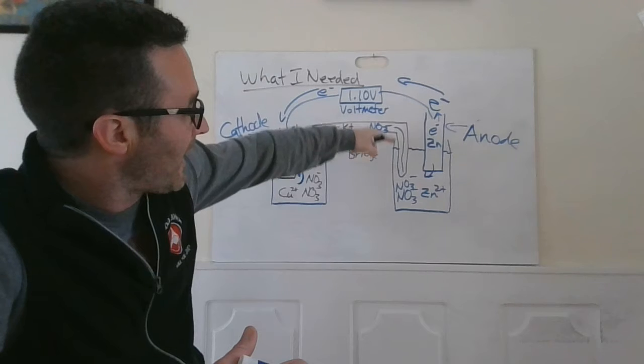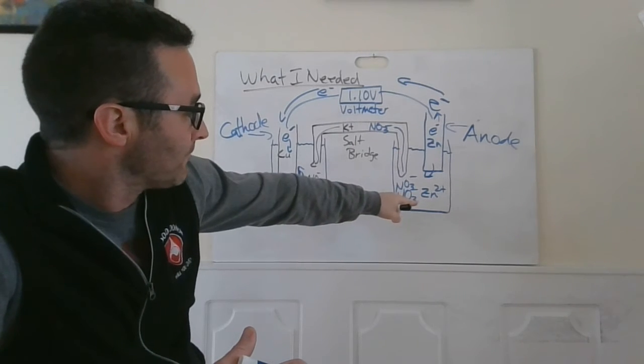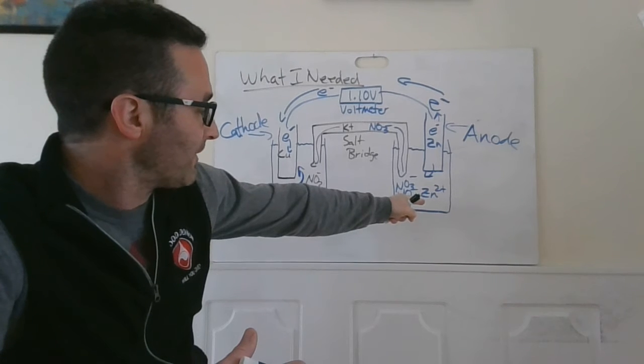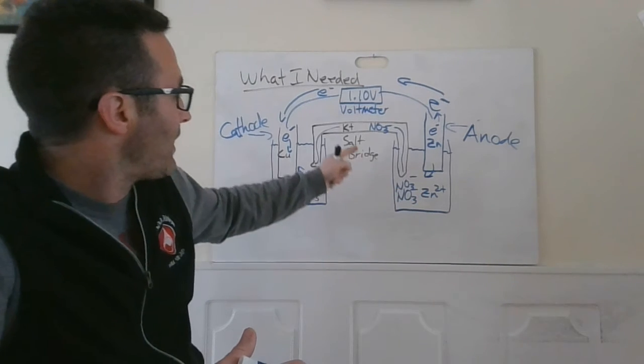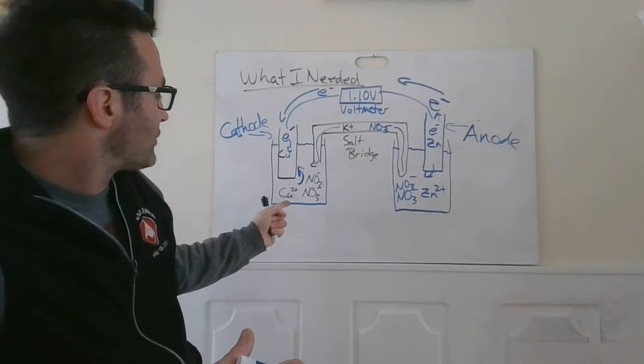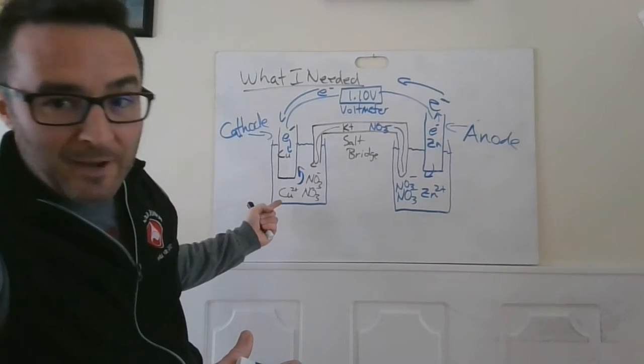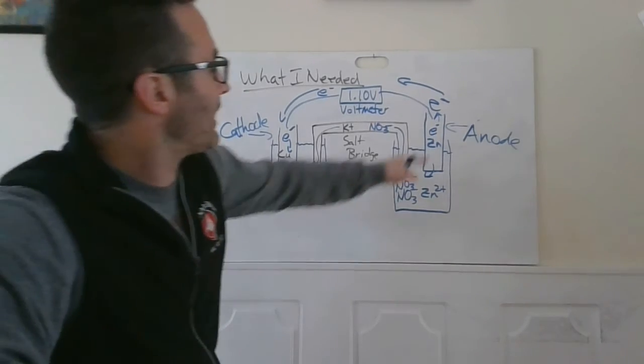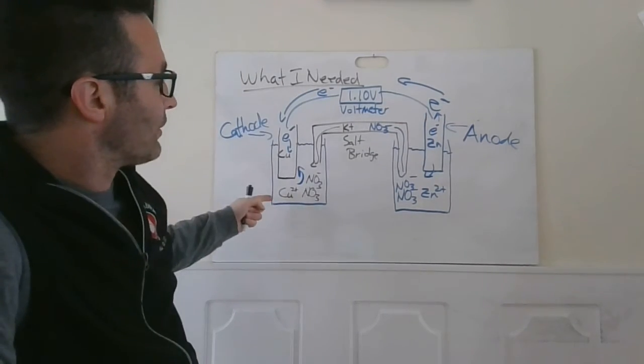So the negative ion is going to go to the anode side to balance out the positive zinc that's going into the solution. And the potassium, your positive ion in the salt bridge, will go to the side that's losing the positive ion out of the solution. Makes sense.